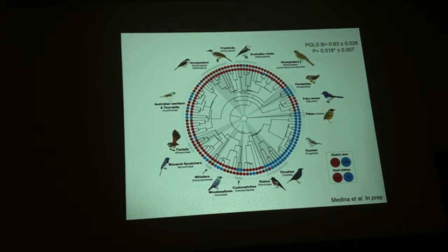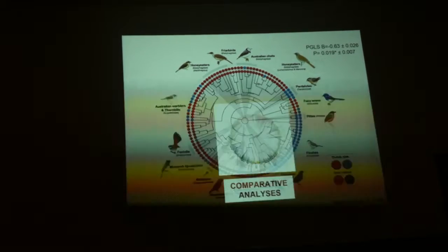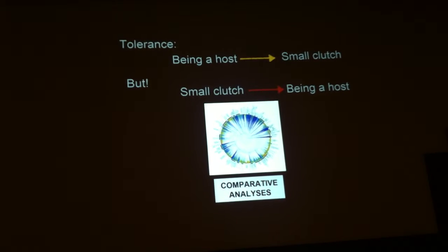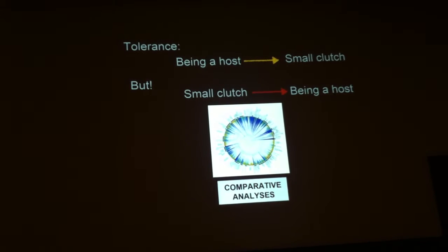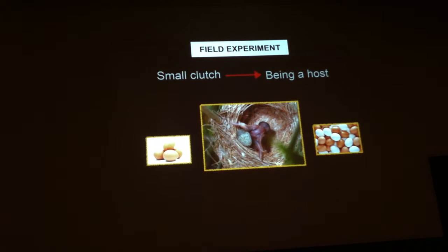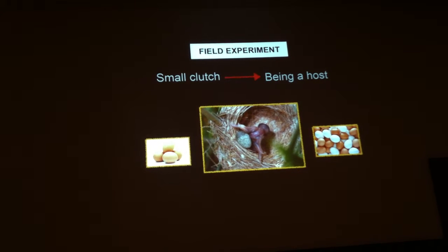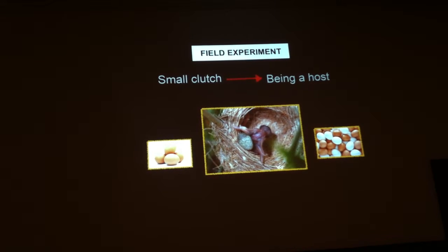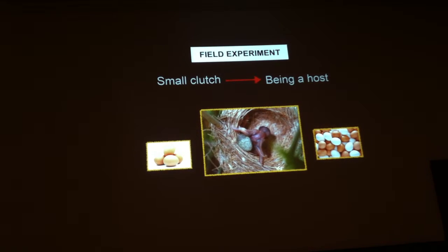However, as you know, comparative analyses don't really tell us much about causality, so it could actually be the other way around. The tolerance hypothesis would suggest that being a host leads to a smaller clutch size, but maybe having a small clutch size can make a species more prone to become a host. This is not a crazy idea, because cuckoo chicks have to evict all the eggs inside the nest of the host, and it's easy to imagine that it would be much easier to evict fewer eggs. So maybe cuckoos are being selected to choose hosts that lay smaller clutches.